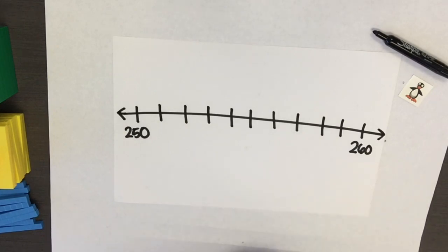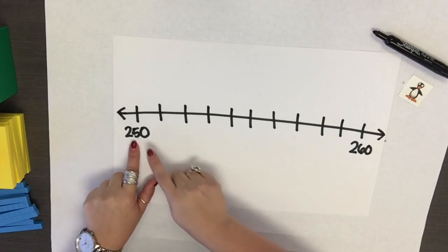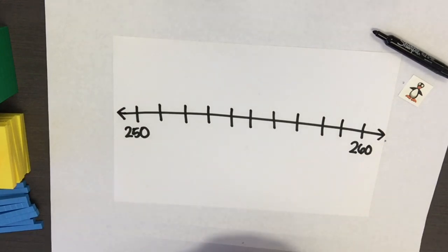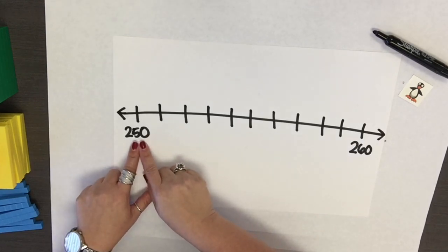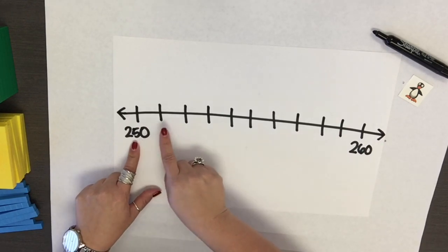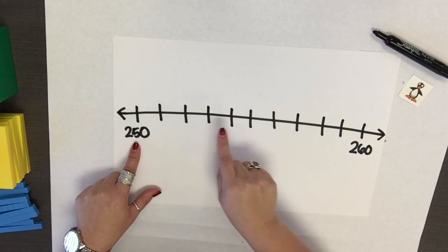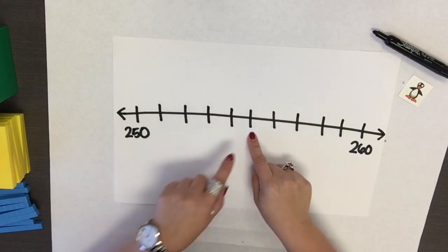Here you see a number line with 250 and 260 positioned at the start and the end. When locating a number on a number line, students may use a counting strategy starting at 250 to determine the location. For example, when locating the point 255 on the number line, students may count up from 250 until they reach 255: 250, 251, 252, 253, 254, 255.